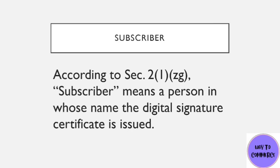Like if you participate in any competition and a certificate is issued to you, you are called a candidate or a student — you have a position applied to you. So, the person who gets a digital signature certificate has the position of subscriber. If you have a digital signature certificate, you will be called a subscriber.